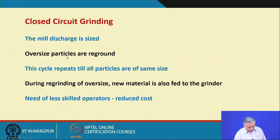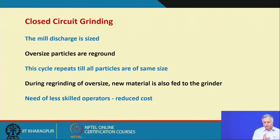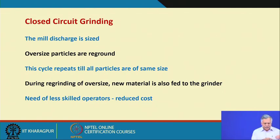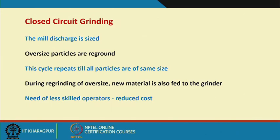The oversize particles are reground; the cycle repeats until all particles are of the same size — ideally we repeat it unless all the particles being fed are finer than a predetermined size. During regrinding of oversize, new material is also fed to the grinder. So we have new feed and recycle feed, and there are calculations we will do in due course to show how much is the recycle feed and how much is the new feed.